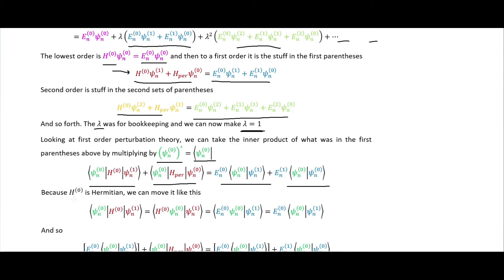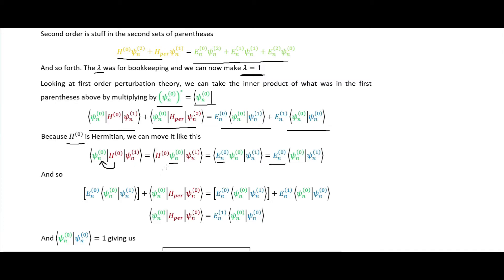Because the Hamiltonian is Hermitian, we can move it to act on the bra vector rather than the ket vector. The energy is a scalar, so it can be moved outside. When the Hamiltonian acts on the green wave function we get the energy times that wave function, so we can factor that out. The terms in square brackets then cancel each other because we have the same expression on both sides of the equation.